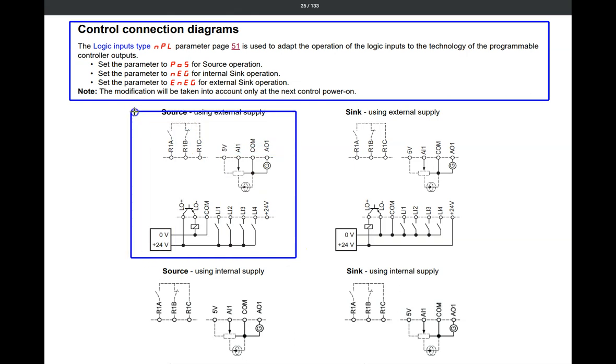So under source operation, using an external source. An external source would come from another control system like a programmable controller. You take a zero volt from that external programmable controller. You connect it to your common on your drive. And this 24 connects to the switches. When the switch is closed, you have plus 24 volts at those digital logic inputs. And you have a run command or a true condition in that case.